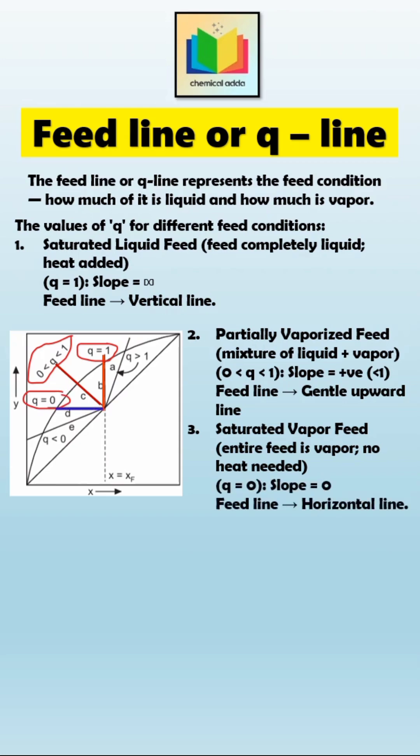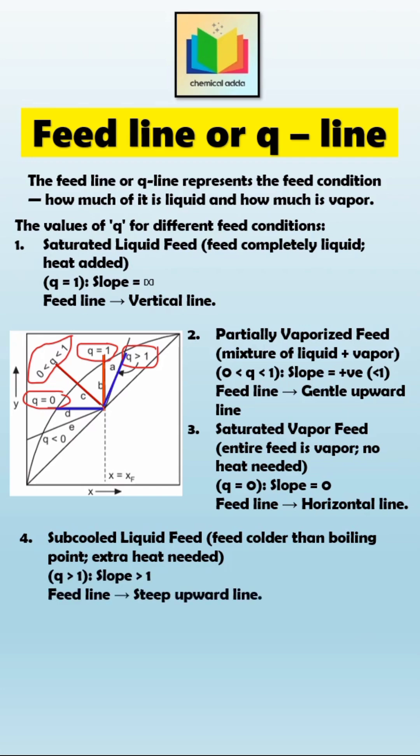If the feed is a sub-cooled liquid, that means it's colder than its boiling point, so it needs extra heat before vaporization. Here, Q is greater than 1 and the slope is greater than 1, giving us a steep upward line on the diagram.